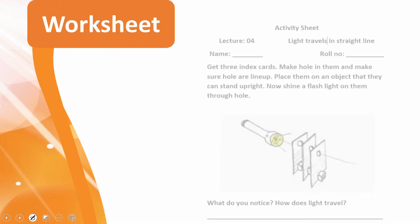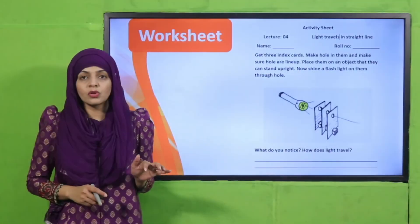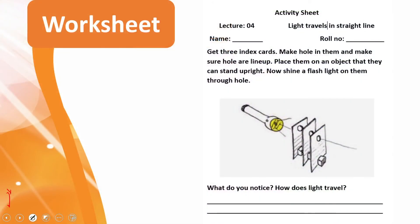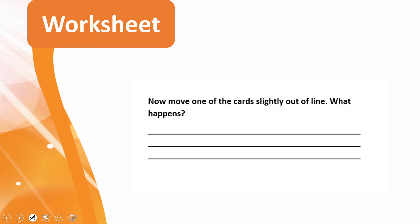Next is the time for practice, for which you can download this worksheet from the description box below this video or get it in print form from your teacher. Write down your name, class, and roll number. Then get three index cards, make holes in them, and make sure holes are lined up. Place them on an object so they can stand upright. Now shine a flashlight on them through the hole. You will perform this practical again as we just did. What do you notice? How does light travel? We have noticed that light travels in a straight line. Now move one of the cards slightly out of the line. Then what happens? The light will be blocked and you will not be able to view it from the last end.